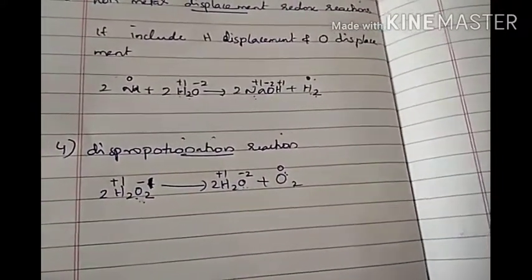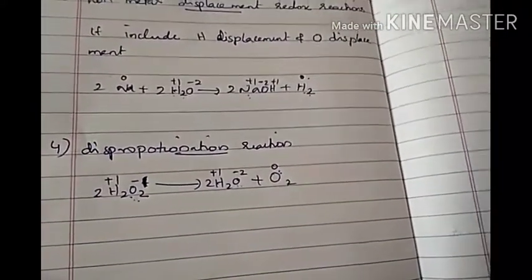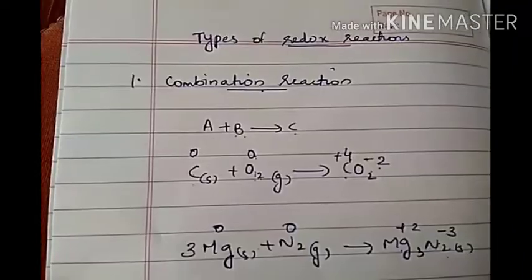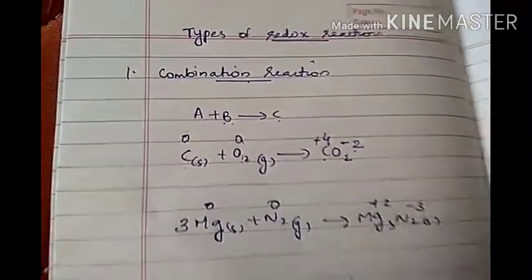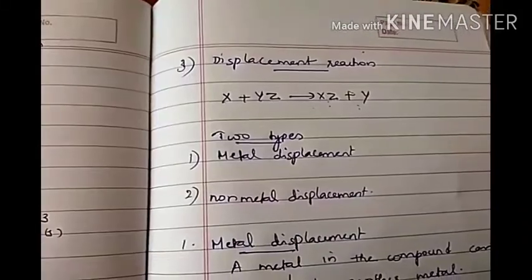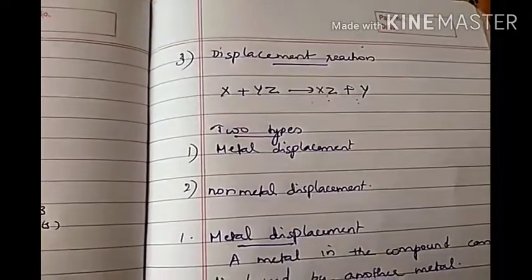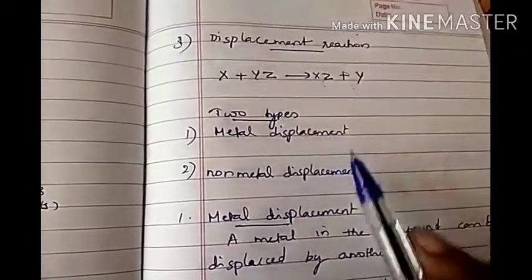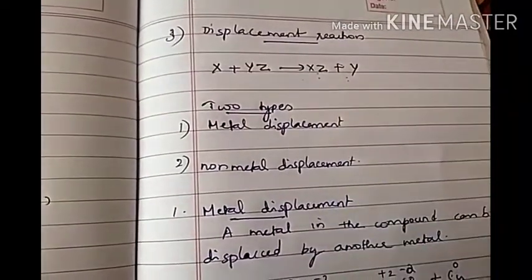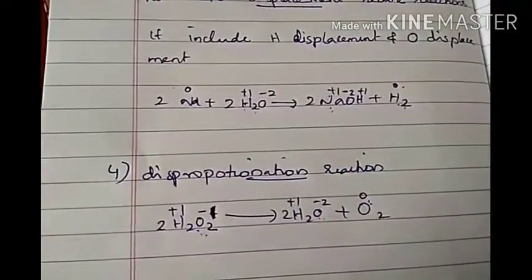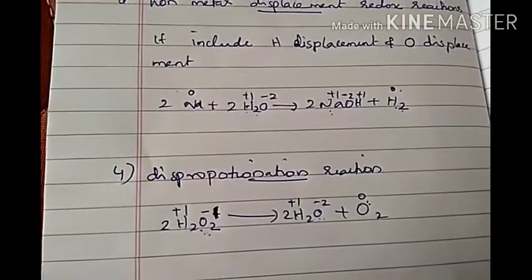So these are the four different types of redox reactions: first, combination reaction; second, decomposition reaction; third, displacement reaction — divided into metal displacement and non-metal displacement; and fourth, disproportionation reaction.